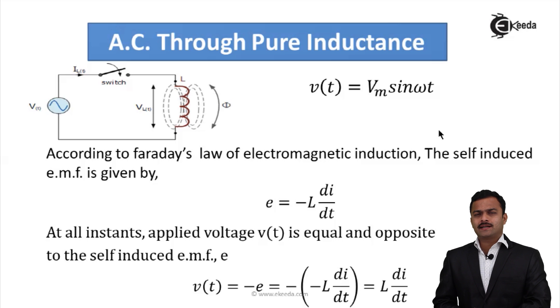Pure inductor is practically not possible, but still in order to understand the behavior of inductor under the influence of AC supply, we are considering a pure inductor. So this is a circuit, AC supply is given to a pure inductor. The AC supply we have considered as Vm sin ωt having a phase angle 0, in turn it will become a reference quantity.